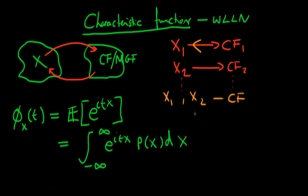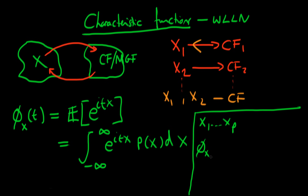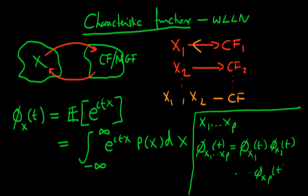What are some of the properties characteristic functions have? One nice property is that if I have a collection of independent random variables X1 through Xp, then the characteristic function for that group as a whole — φ(X1, ..., Xp) as a function of t — is just equal to the product of the individual characteristic functions: φ(X1)(t) times φ(X2)(t), all the way through to φ(Xp)(t). So for independent random variables, the characteristic function of the group is simply the product of each individual characteristic function.